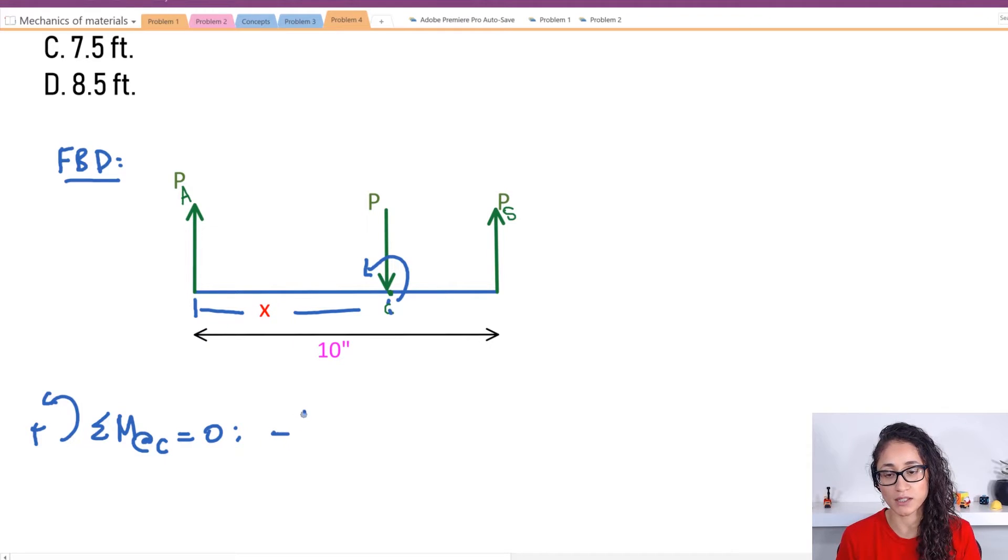So I have PA which is minus PA times x. So this is the moment arm distance and then minus because this is going down. This is going the opposite direction of the moment.